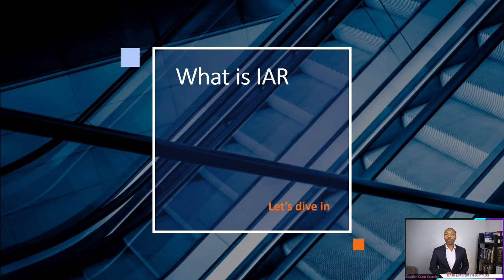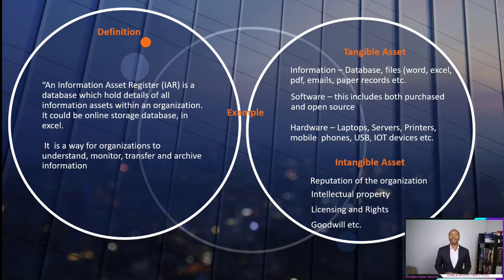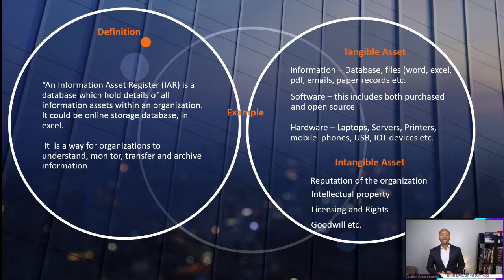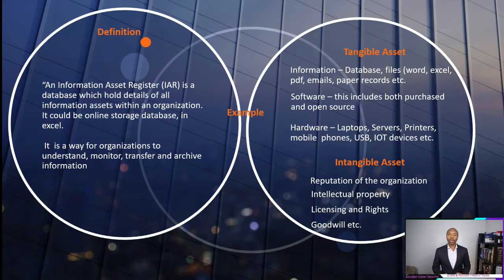An information asset register is a database which holds details of all information assets within an organization. It can be a database, an Excel spreadsheet, or an online storage database. It is a way for organizations to understand, monitor, transfer, and archive information.